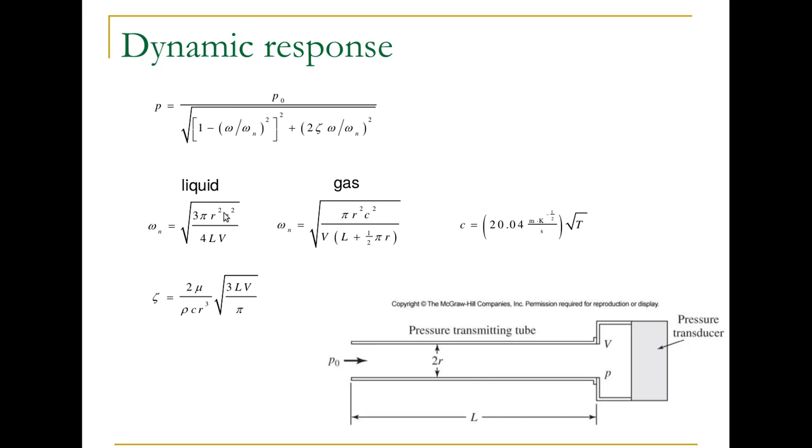The natural frequency depends on the geometry, so the radius of the tube, the length of the tube, and the volume here that's in contact with the transducer. It also depends on the speed of sound in that fluid, so that's given by this expression.